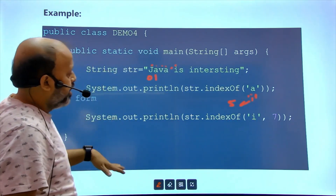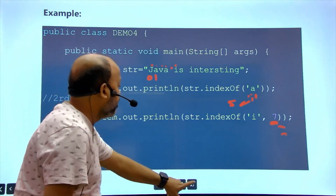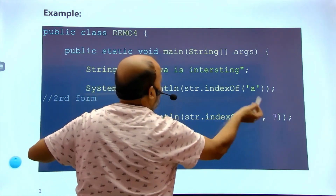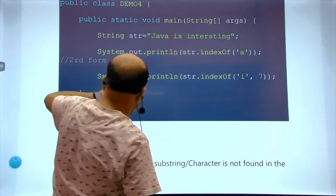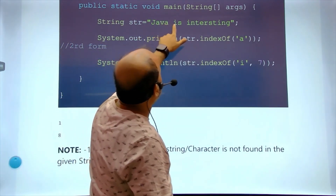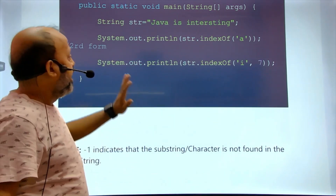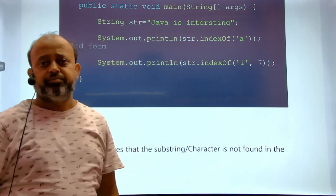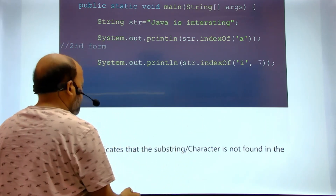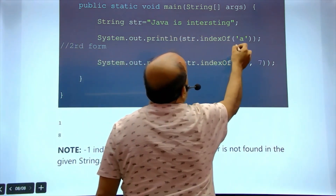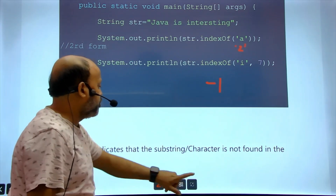indexOf() has two formats. Normally it starts searching from position 0. If you give a second argument, like indexOf('i', 7), it starts finding from position 7. So it skips the earlier 'i' at position 5 and finds the next one at position 8. If the character is not present at all, like searching for 'z', you get minus one as output. This is important.